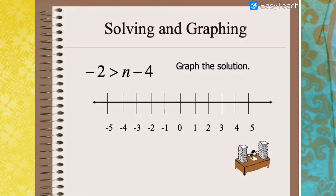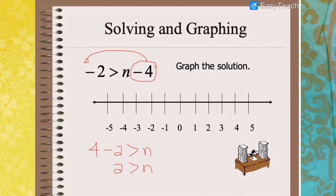Another example: negative 2 greater than n minus 4. Transfer negative 4 to the other side — that gives 4 minus 2 greater than n, which is 2 greater than n, or written as n less than 2. To graph: locate 2 on the number line. Since the inequality sign does not have the equal symbol, it will be an open circle. Since n is less than 2, the arrow goes towards the left.